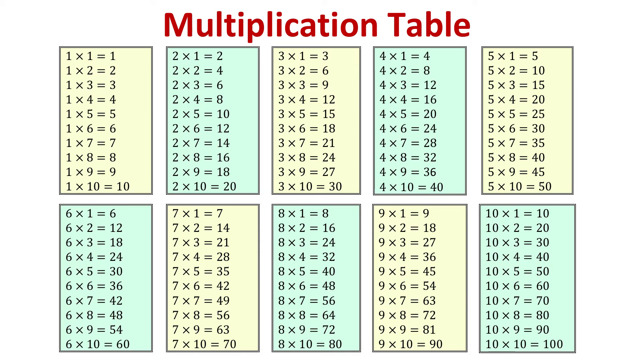The most difficult products to memorize are 6 times 7 equals 42, 6 times 8 equals 48, and 7 times 8 equals 56. Take time on these and repeat them until you have them memorized.